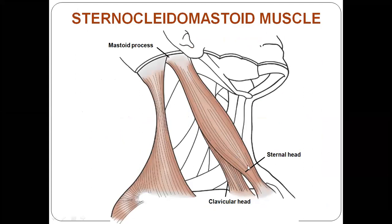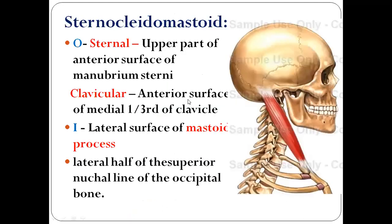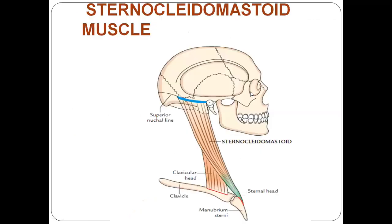The sternocleidomastoid muscle has two heads of origin. Reading from the name: 'sterno' is sternum, 'cleido' is clavicle, 'mastoid' is the mastoid process — the first two words indicate origin, the last word indicates insertion. It has a sternal head and a clavicular head. Origin: sternal head from the upper part of the anterior surface of the manubrium sterni; clavicular head from the anterior surface of the medial one-third of the clavicle. Insertion: lateral surface of the mastoid process and lateral half of the superior nuchal line of the occipital bone.